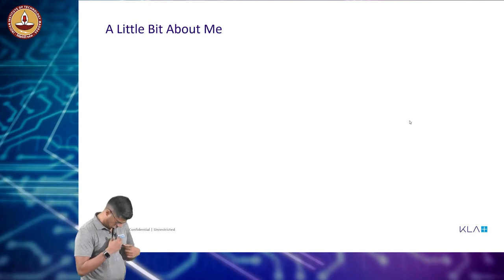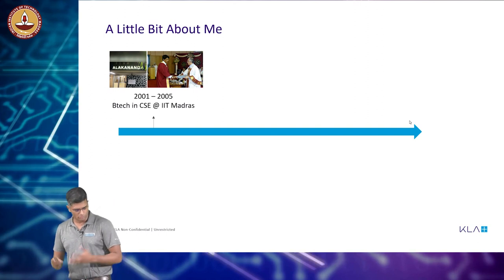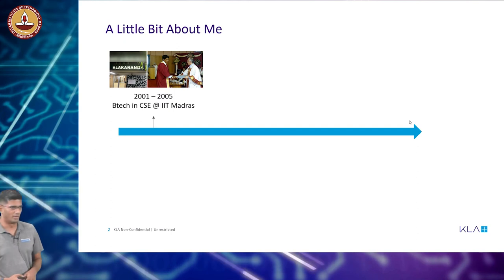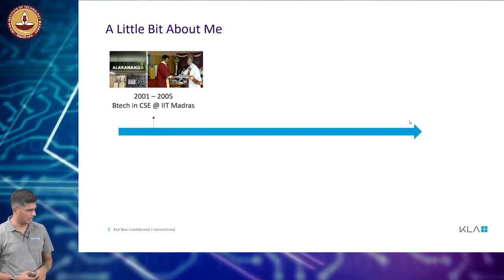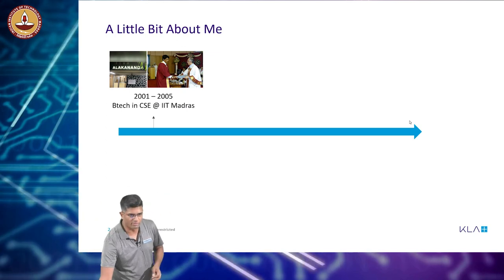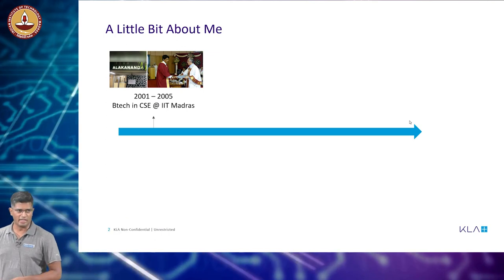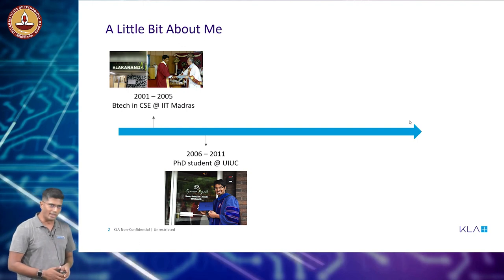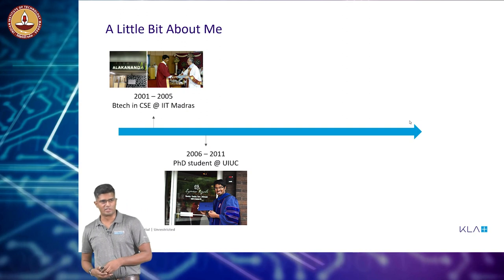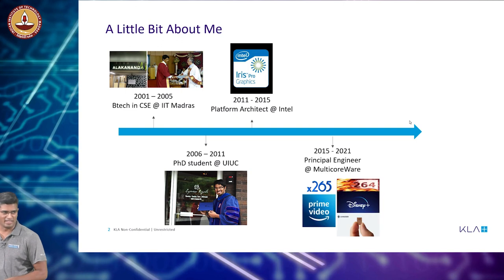A little bit about me before we get going. I was actually a student of IIT Madras — I got my undergraduate in computer science in 2005 from IIT Madras. I was a student here at IITM, and that is me getting my degree from the then director, Professor Anand. I got my PhD at UIUC. Following that, I worked at Intel designing some chips.